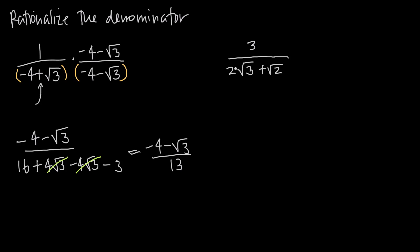Now let's look at another example. Here we have 3 divided by 2 times the square root of 3 plus the square root of 2. We have square roots in our denominator, so we want to rationalize. We want to keep the two terms exactly the same but flip the sign in between — so because we have a positive sign, we want to make it a minus sign, and we're going to get 2 root 3 minus root 2 divided by 2 root 3 minus root 2.